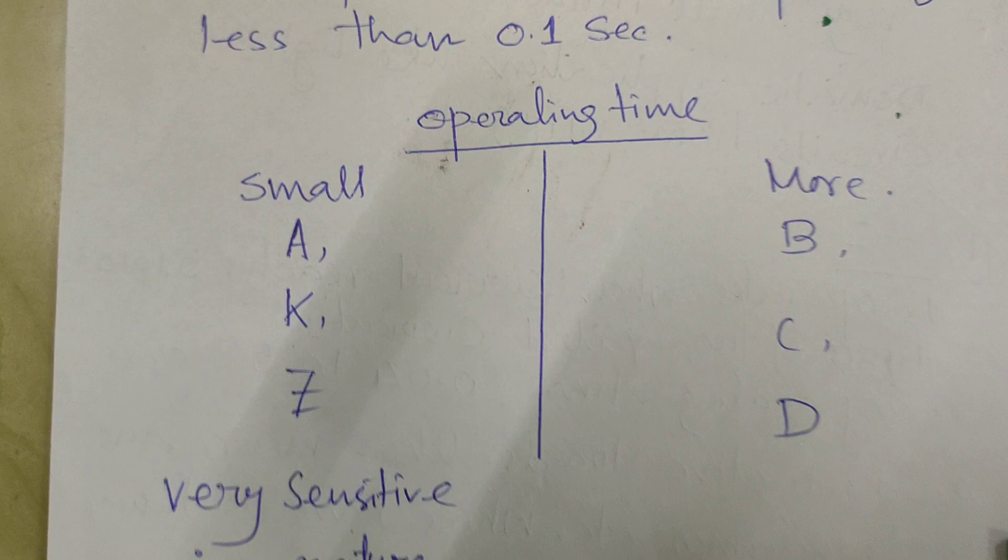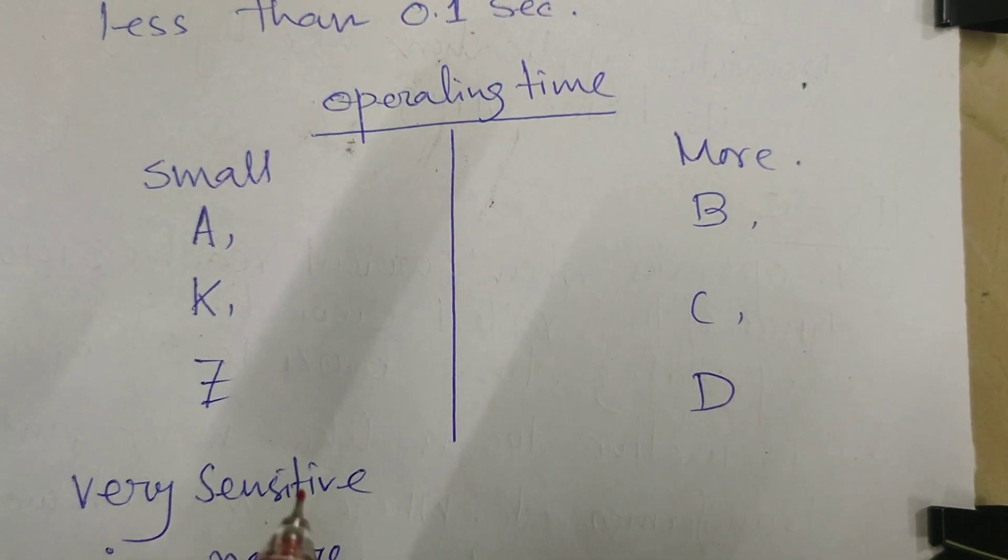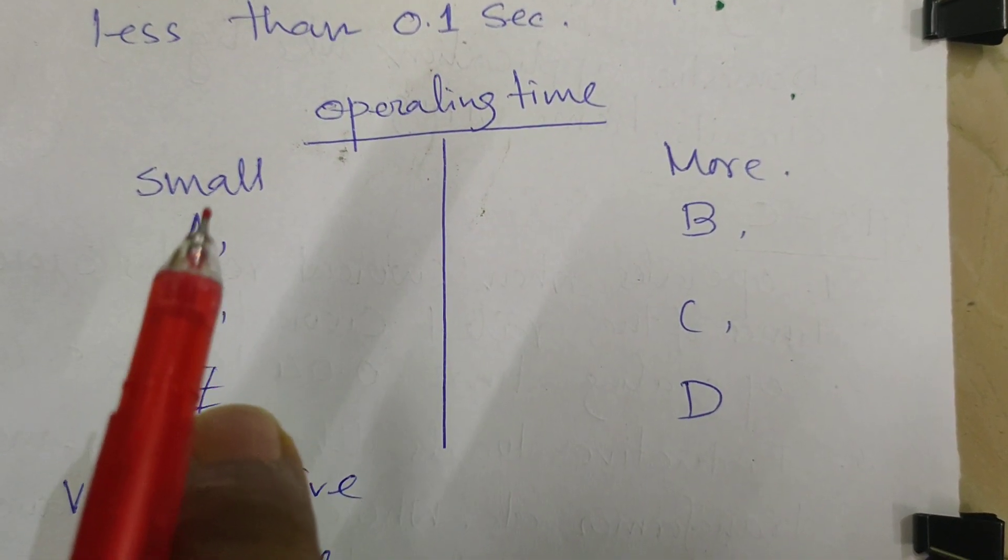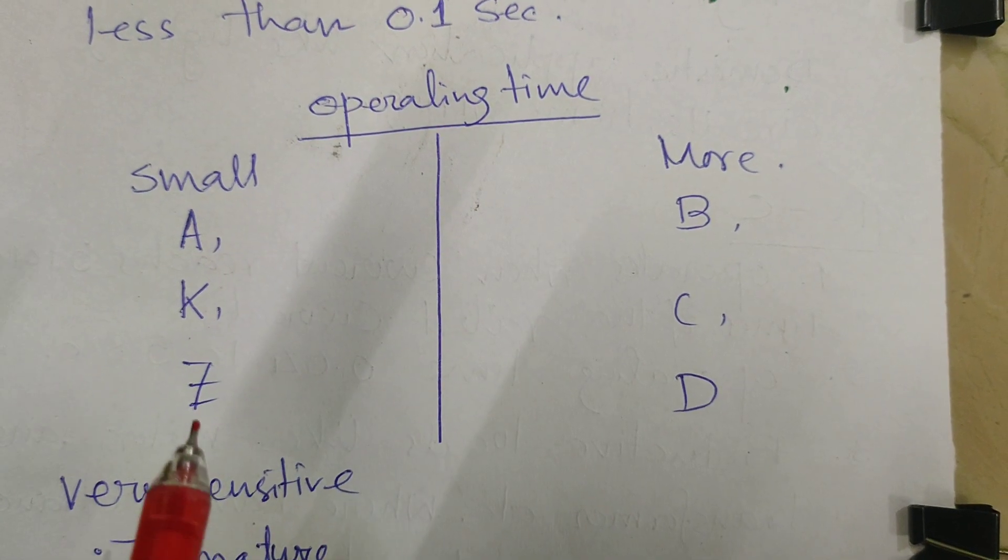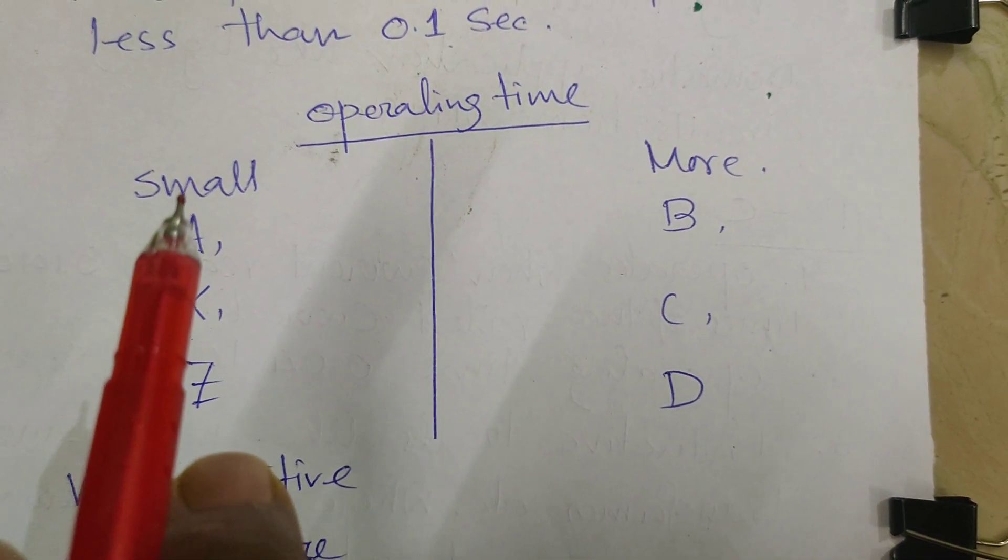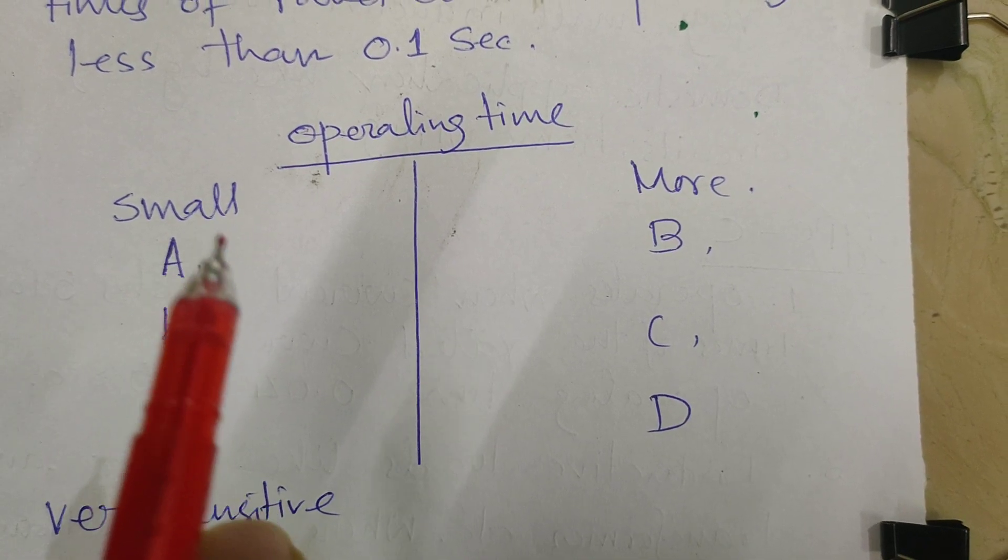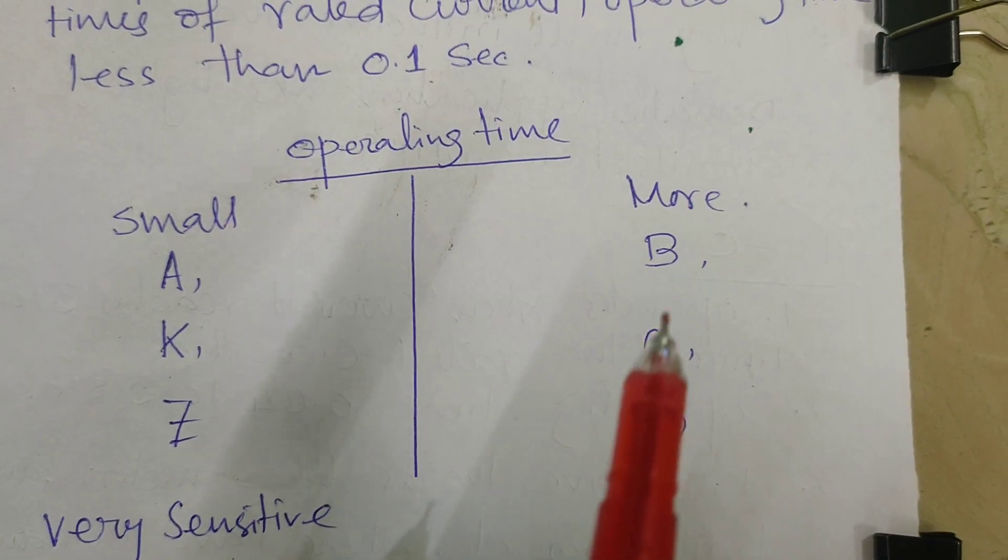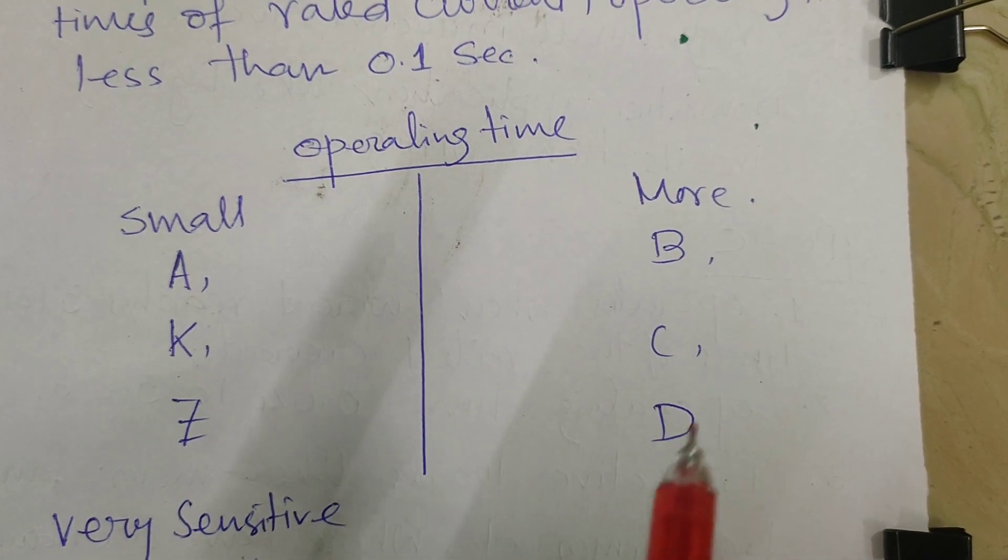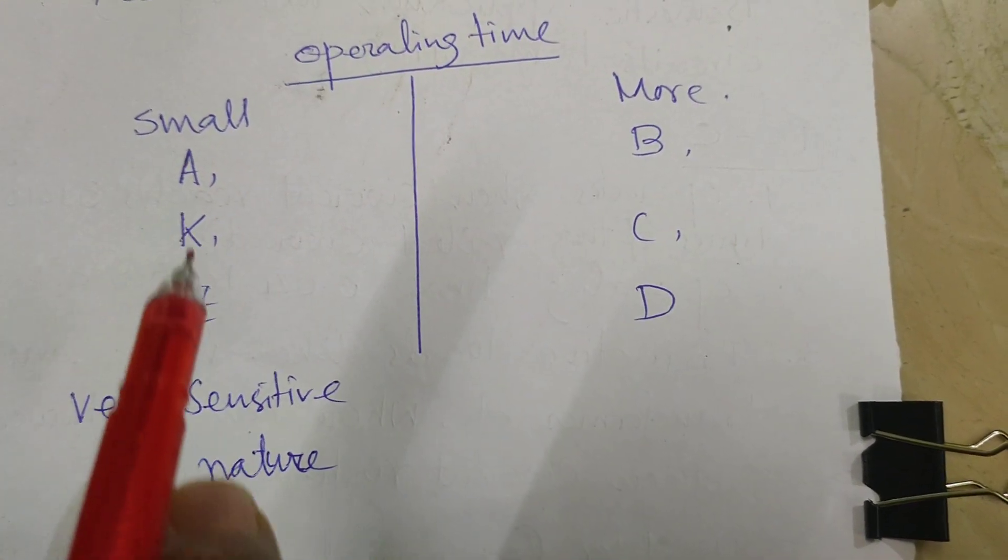Depending on the operating time, the MCBs are classified into two types: small and more. This takes the small time to operate and this takes the more time to operate. A-type, K-type, and Z-type take the small operating time for its operations. And B, C, D are used for more operating time. These are very sensitive in nature.